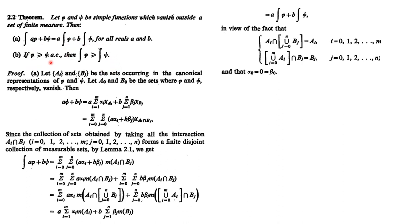Similarly, if the simple function φ is greater than or equal to ψ almost everywhere, then the integral of φ is greater than or equal to the integral of ψ. This is easy to prove: since φ ≥ ψ almost everywhere, the set where φ < ψ has measure zero, so the integral over that set is zero and has no effect on the overall integral value.